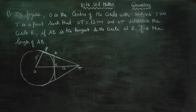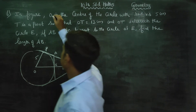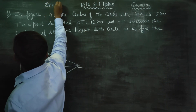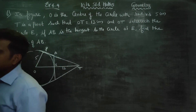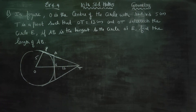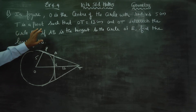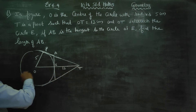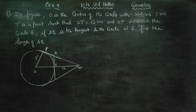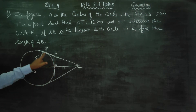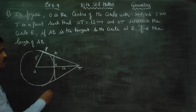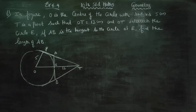Dear 10th standard students, this is Exercise 4.4, sum number 6. In the figure, O is the center of the circle with radius 5. T is a point such that OT is equal to 13. In the diagram, you can see OT is equal to 13. A line from T intersects the circle at E. If AB is the tangent at E, find the length of AB.